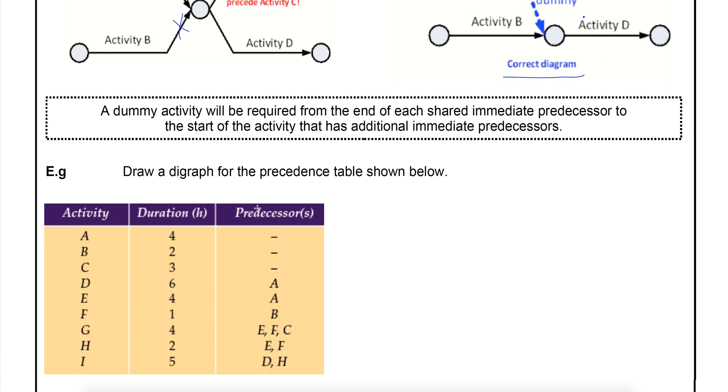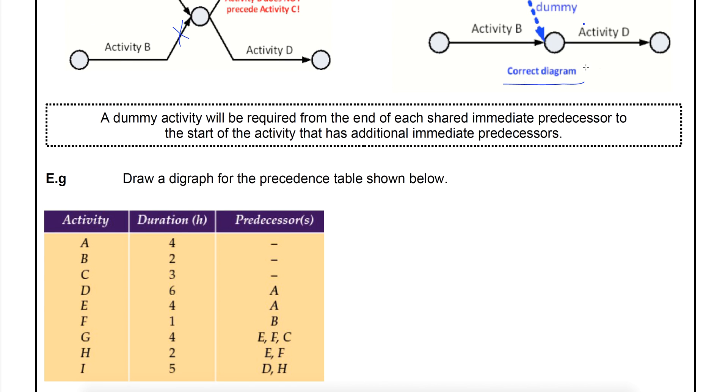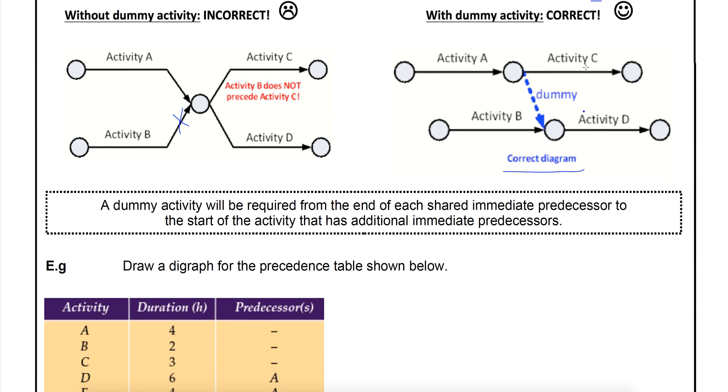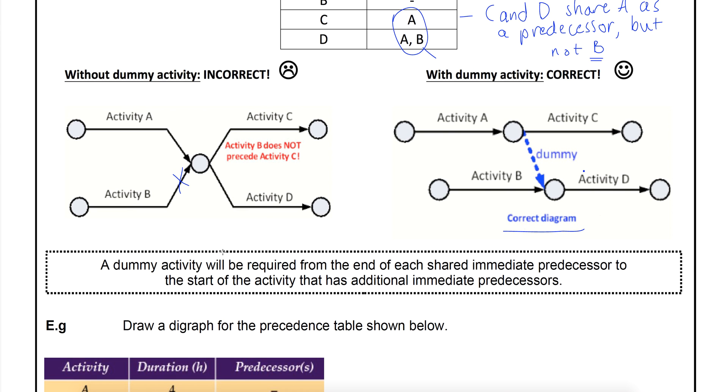In summary, a dummy activity will be required and where it goes is from the end of each shared immediate predecessor. See how it was A that was shared? C and D both shared A. So that means the dummy is going to go from A and it's going to go to the start of the activity that has the additional predecessor. D was the one that had the additional one, it had B. So it's going to go from the end of A to the start of D.